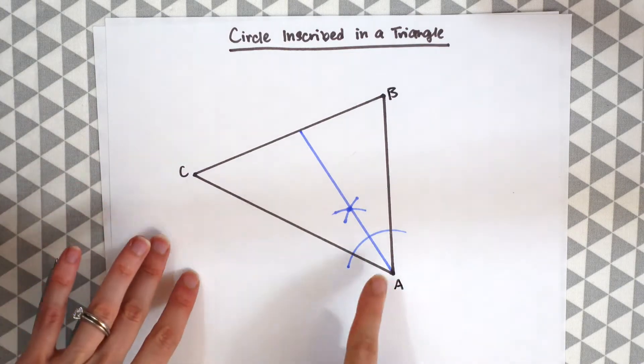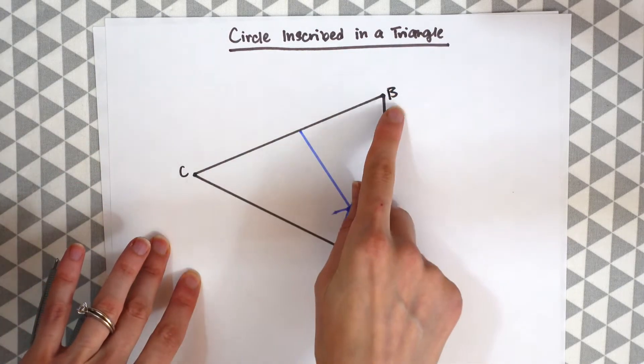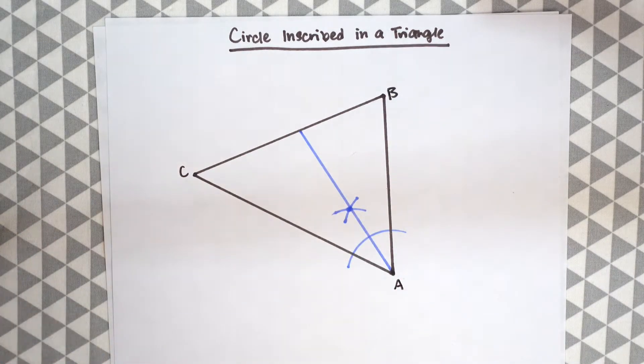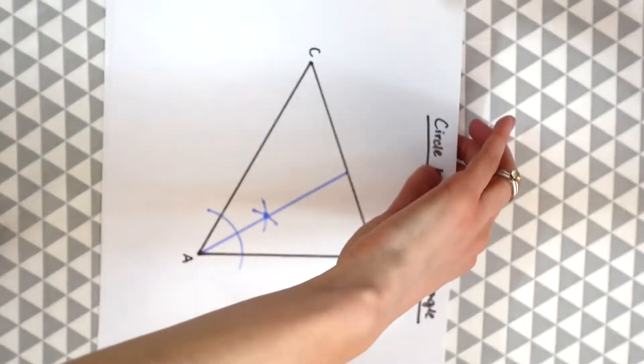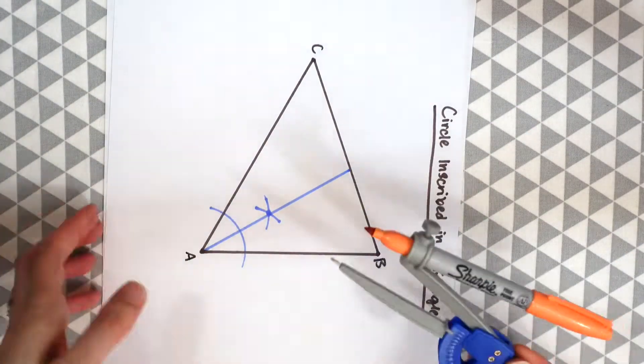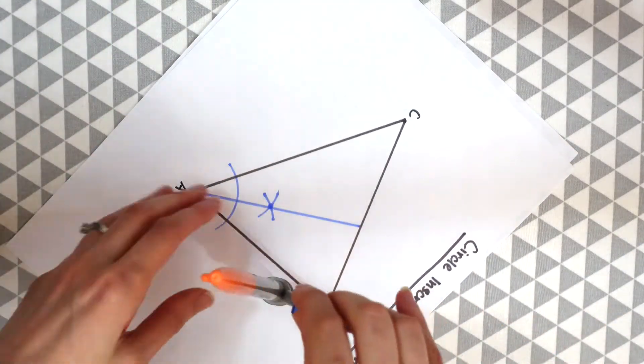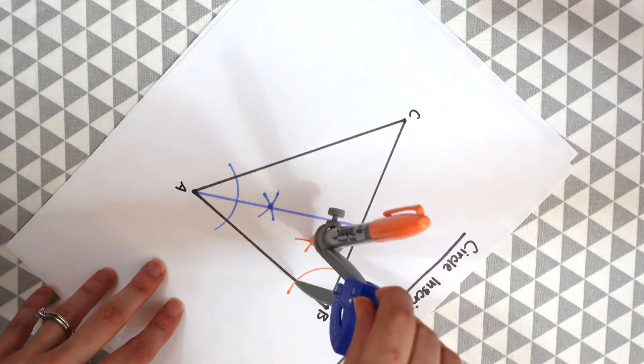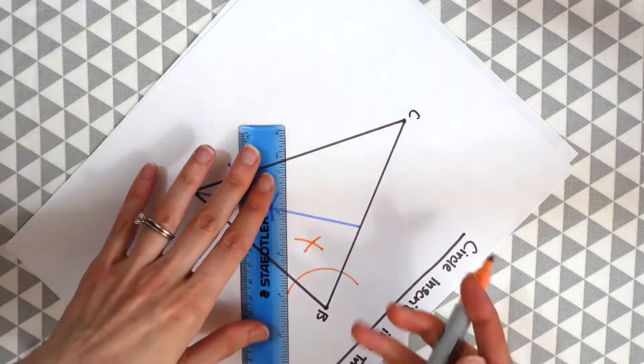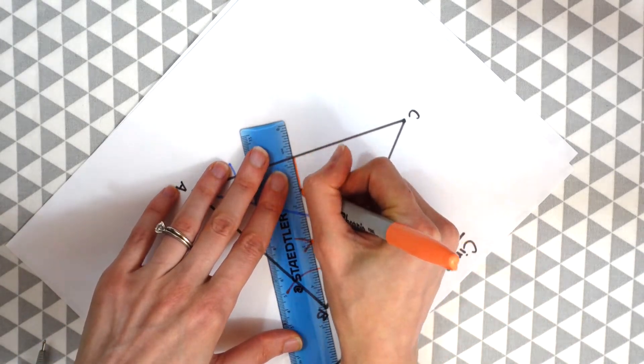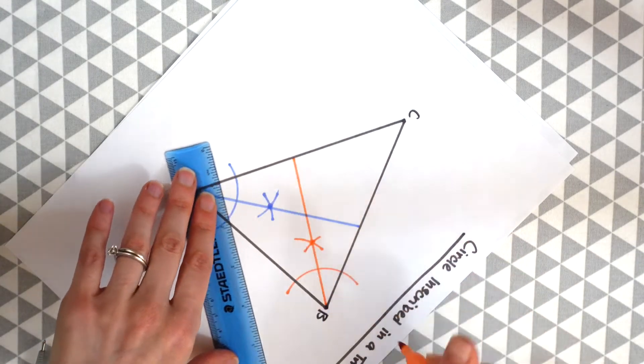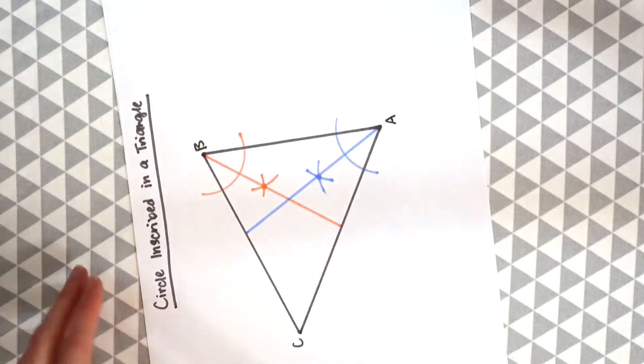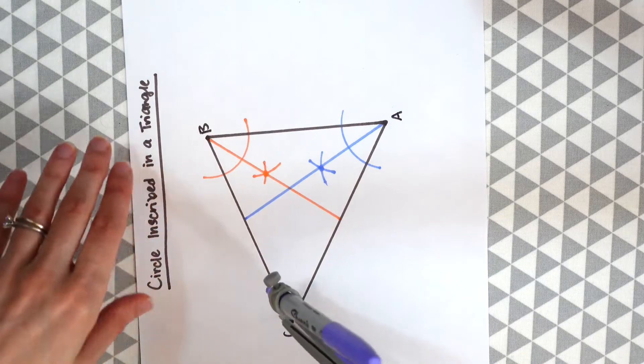So now we're just going to make angle bisectors at the other angles, angle B and angle C. So let's do that. And lastly our last angle bisector at angle C.